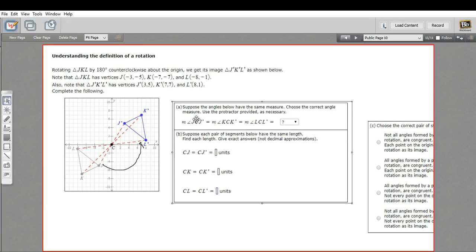The first thing they wanted us to do is to take a look at these, what they're calling angles, of J, C, J prime, K, C, K prime, and L, C, L prime. So what that is, it's the original point to the vertex to the rotated point. And they're asking, what degree is this angle?